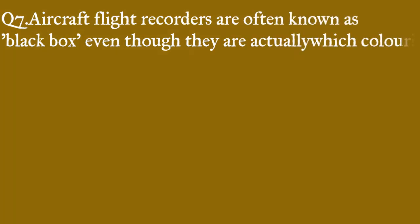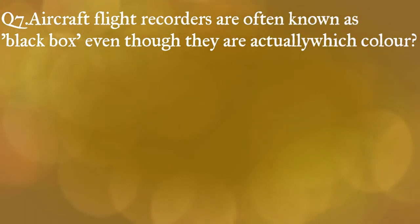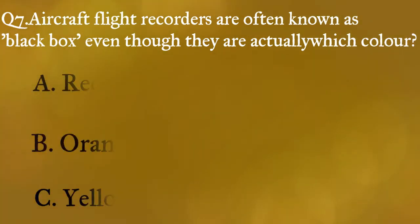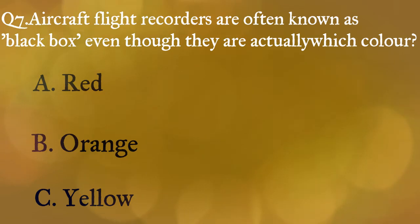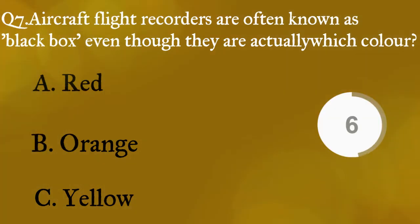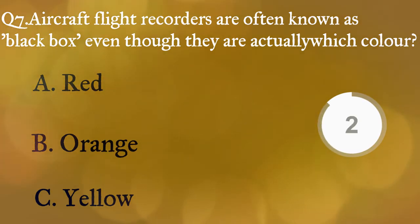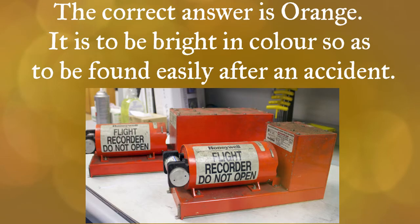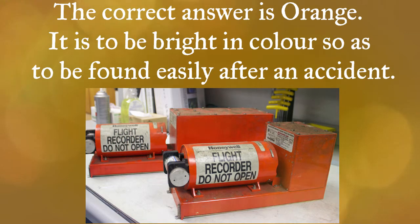Question seven: aircraft flight recorders are often known as black boxes, even though they are actually which color? A) red, B) orange, C) yellow. The correct answer is orange — it is bright in color so as to be found easily after an accident.